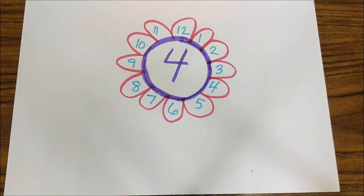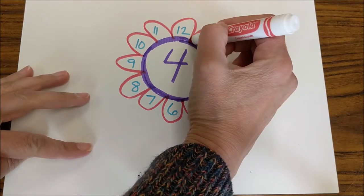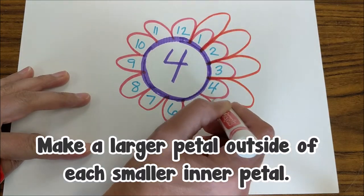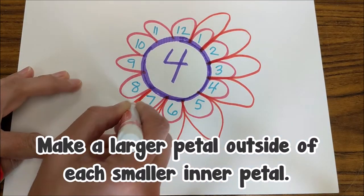Then you're going to make outer petals. Use a different color and make them a little bit longer so that there's space to write a new number in each of the petals.